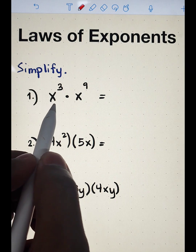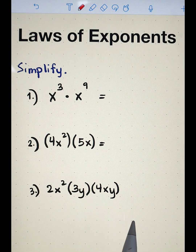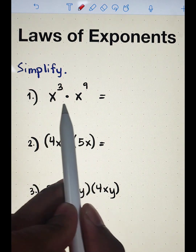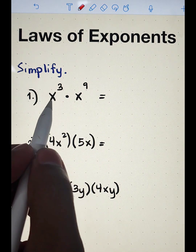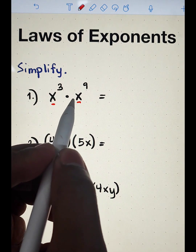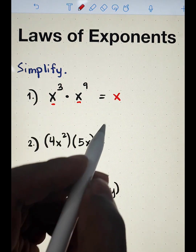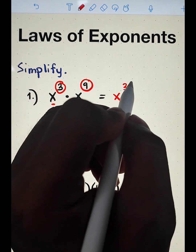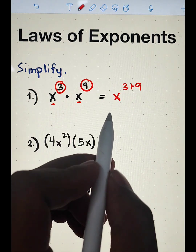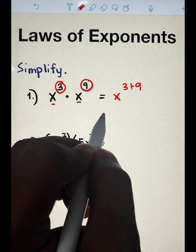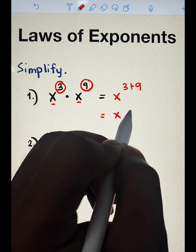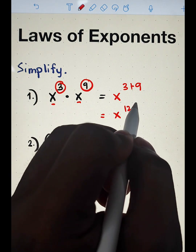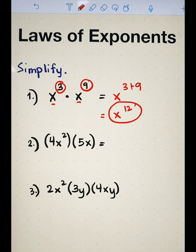In number one, we are given x cubed times x raised to 9. We can use the product rule to simplify or to multiply these expressions. Here, we have the same base. We need to copy the base and add the exponents — that is 3 plus 9. Simplifying this gives us x raised to 12, and this is the answer for item number one.